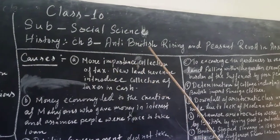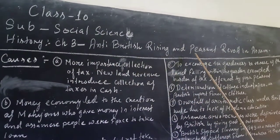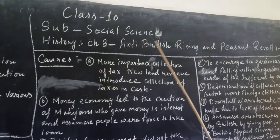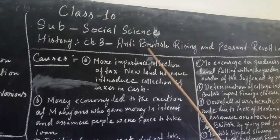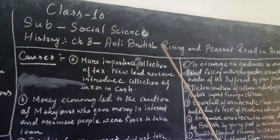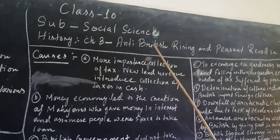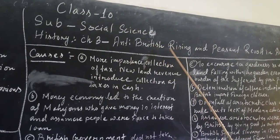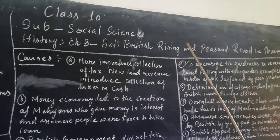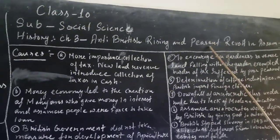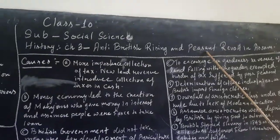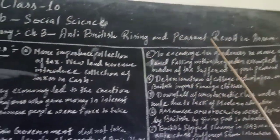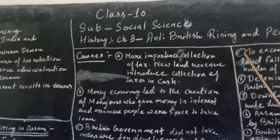This chapter covers anti-British rising and peasant revolt in Assam. First of all, we have to know what is this anti-British rising — rising against the British due to their rule. Peasant means farmers' revolt in Assam. We will study about these two topics in this chapter.